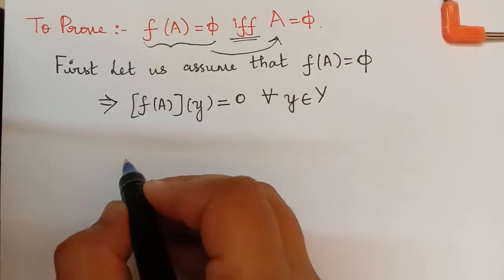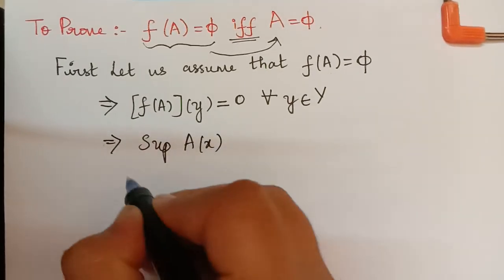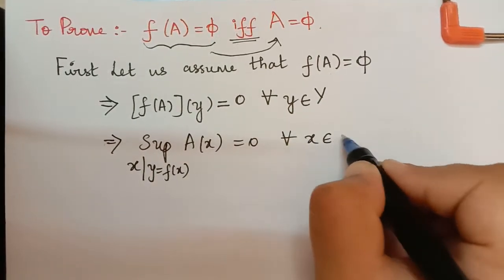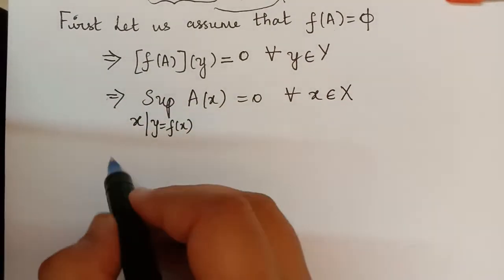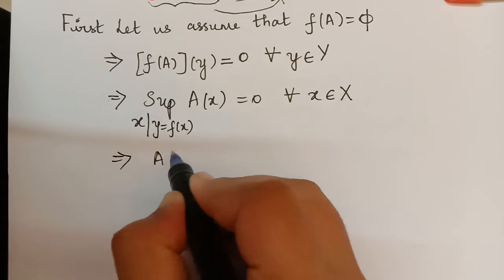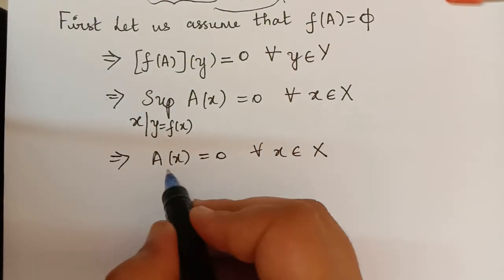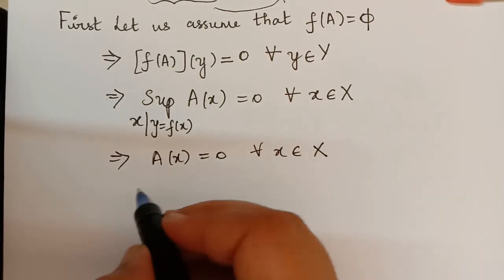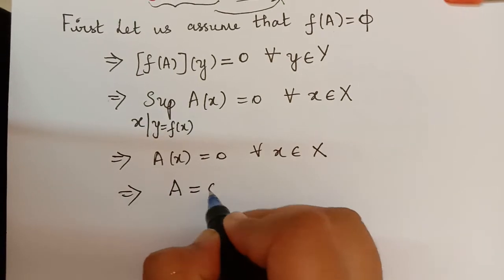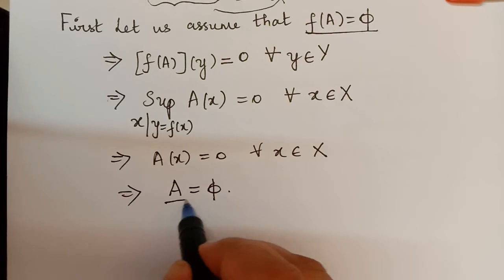This implies that the supremum of A(x), for x such that y = f(x), is equal to 0 for all x an element of capital X. Since the supremum of A(x) equals 0, we observe that A(x) = 0 for all x an element of capital X. If all elements have membership grade 0, then A will be a null set, so A = φ. Thus, starting from f(A) = φ, we have proved that A = φ.